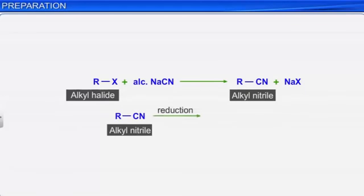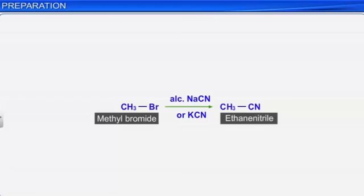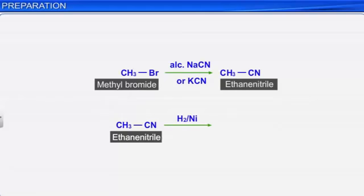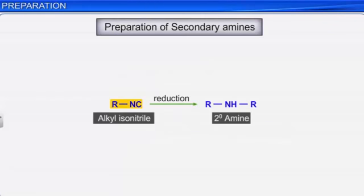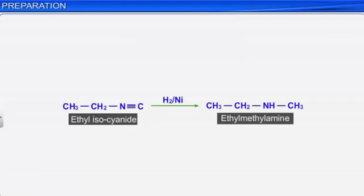This is an excellent method for the preparation of primary amines. For example, methyl bromide on treatment with alcoholic sodium or potassium cyanide gives ethanenitrile. This on reduction with hydrogen in the presence of nickel as catalyst gives ethanamine. The reduction of isonitriles or carbylamine yields secondary amines. For example, ethyl isocyanide on reduction gives ethyl-methyl amine, which is a secondary amine. In this method, we get only secondary amines in which one group is always the methyl group.